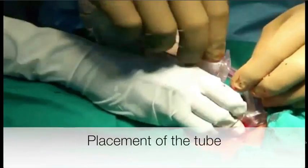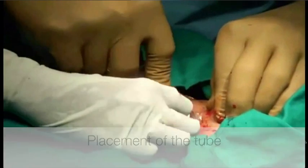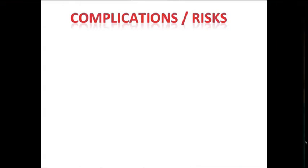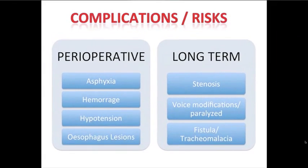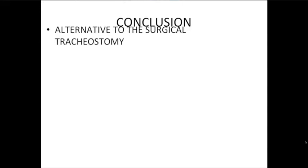If bleeding occurs, hemostasis must be performed. Finally, the tracheostomy tube is placed. Concerning complications and risks: perioperative complications include asphyxia, hemorrhage, hypotension, and esophageal lesions. Long-term complications can include stenosis, voice paralysis, or fistulas such as tracheomalacia.